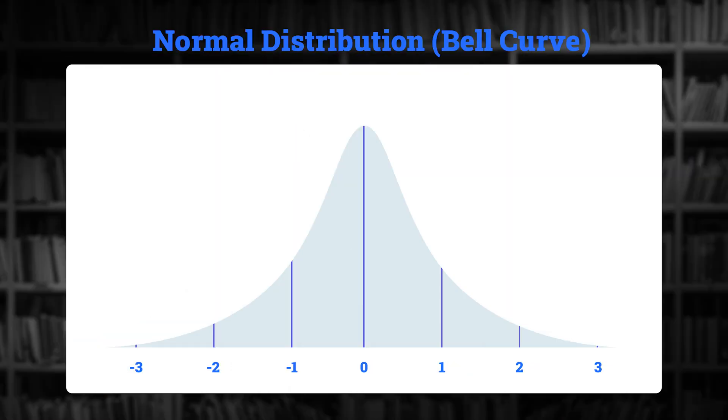When we talk about normal distribution, this is what is sometimes called a bell curve, or you'll see it plotted as a bell curve. So a t-test is comparing the mean of two groups that both have a normal distribution. The mean you can also just think of as the average. Therefore, a t-test is comparing the average of two samples.